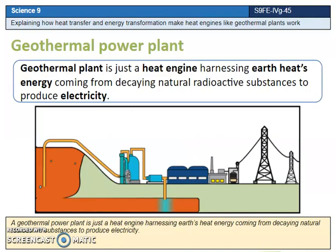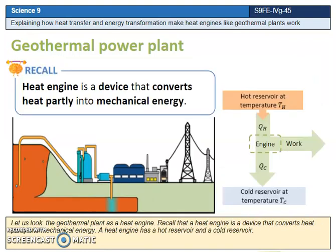A geothermal power plant is just a heat engine harnessing Earth's heat energy coming from decaying natural radioactive substances to produce electricity. Let us look at the geothermal plant as a heat engine. Recall that a heat engine is a device that converts heat partly into mechanical energy.